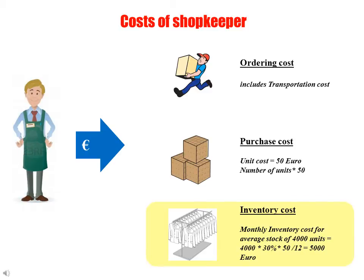The third cost is inventory cost. On average, some amount of goods is always present in the shop, and the cost associated with holding such goods is inventory cost. For this game, inventory cost is assumed as 30% of the unit cost for the period of a year. This implies that if your shop has an average stock of 4,000 units during a period of a month, then your shop incurs 5,000 euro worth of inventory cost.